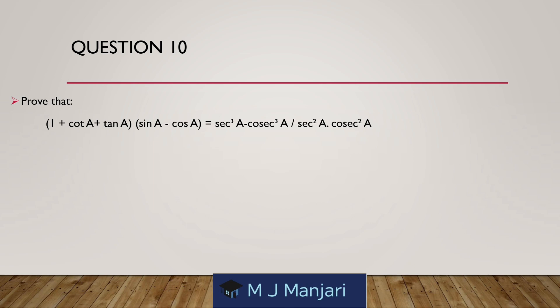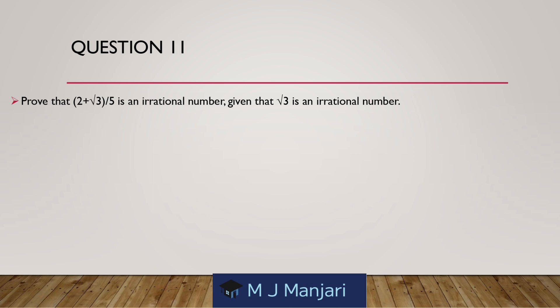Question 10. Prove that (1 plus cot A plus cosec A) into (sin A minus cos A) is equal to sec³A minus cosec³A divided by sec²A dot cosec²A.